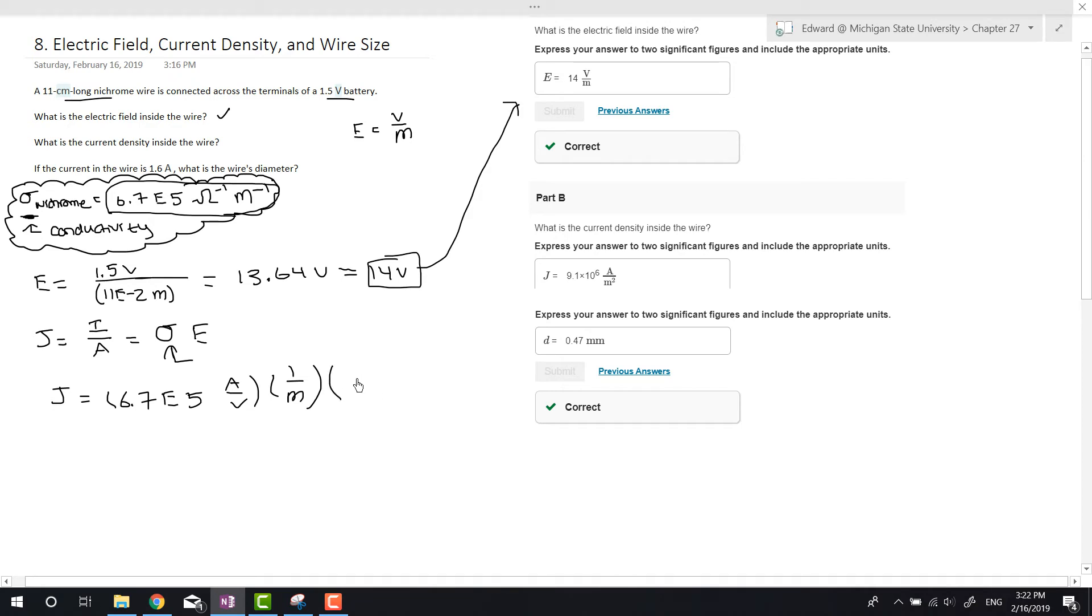And E is 13.64 volts per meter. When we multiply these together, the volts cancel and we get amps per meter squared.